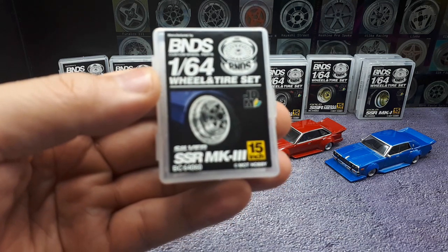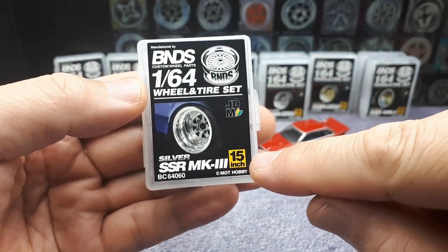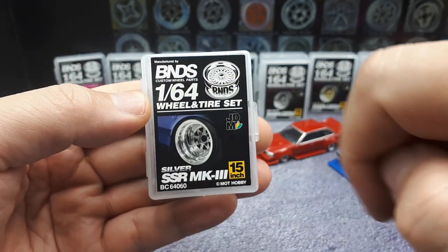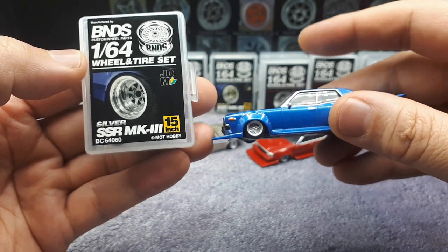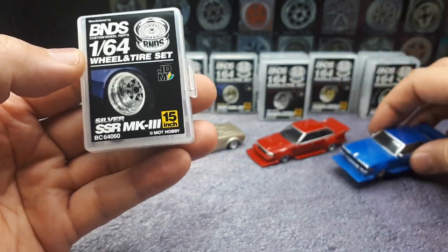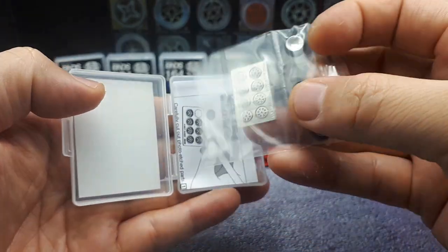This is the SSR Mark III in silver. This is actually a 15 inch wheel in 1:64 scale, which is specifically made to fit these Aoshima Garacan cars because most diecasts have much bigger wheels than these. You got this nice durable case.